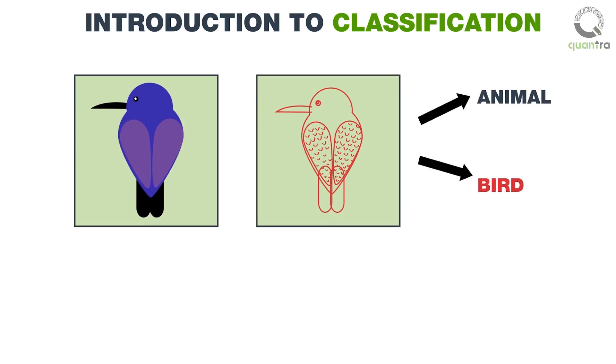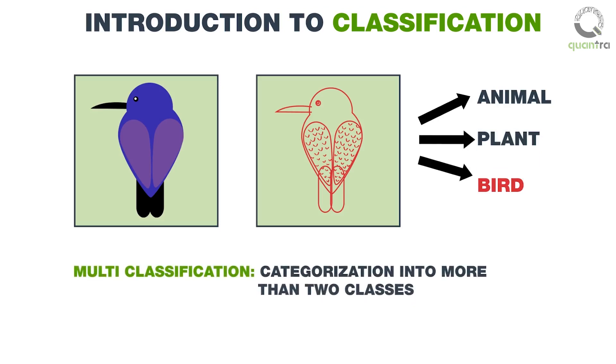Taking the same example forward, we can categorize the data into multiple categories, such as animals, birds, and plants, which is more than two classes. Such classification which has more than two classes is known as multi-classification.